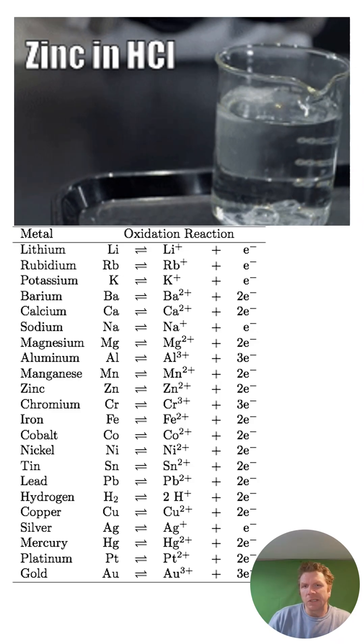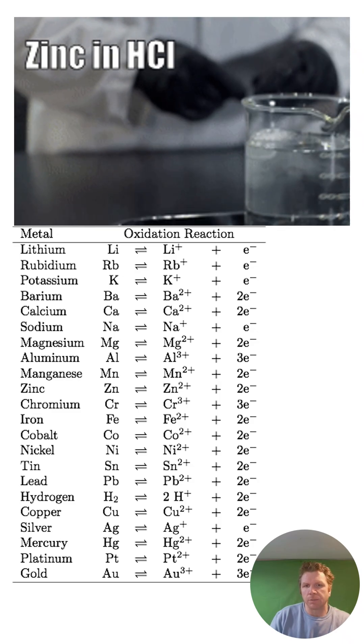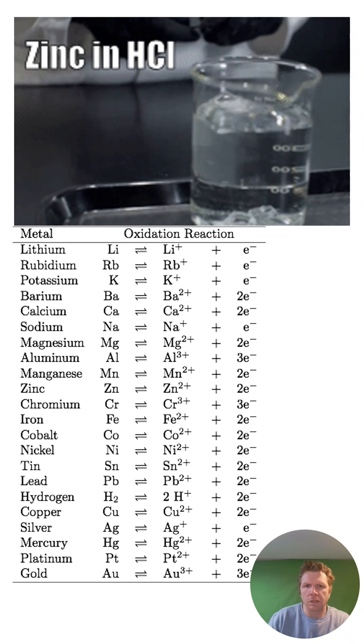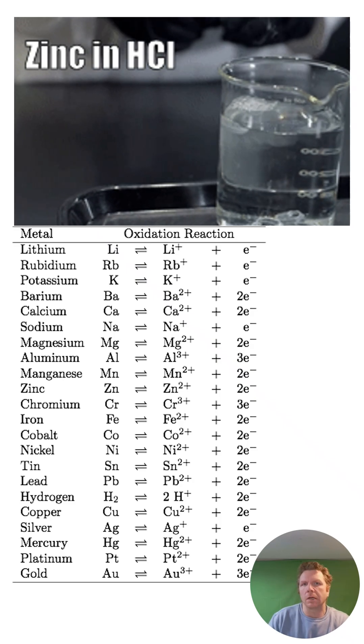Now, if you put a metal in the presence of an acid, for example HCl, what we see here is zinc metal that's been dropped in a beaker filled with HCl. And what you can see is that there's lots of bubbles forming. This reaction is taking place.